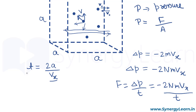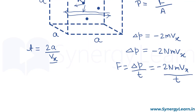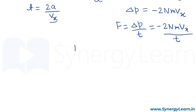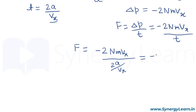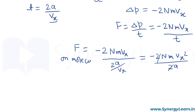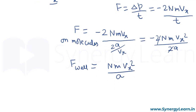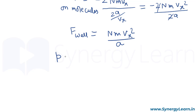So the total time for calculating the force is taken as 2a/vx, and therefore the expression for force becomes F equals minus 2Nm·vx divided by (2a/vx), which gives minus 2Nm·vx² divided by 2a — the 2 cancels. This is the force on the molecule, so the force on the wall will be the positive reaction: F equals Nm·vx² divided by a.